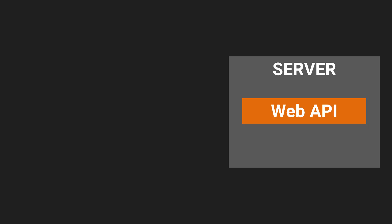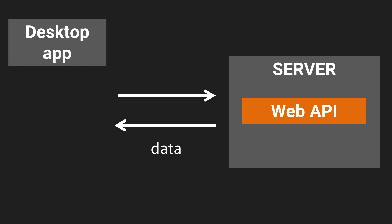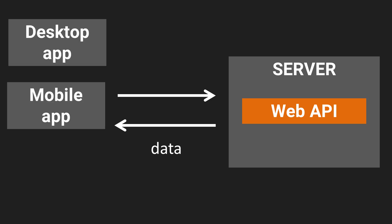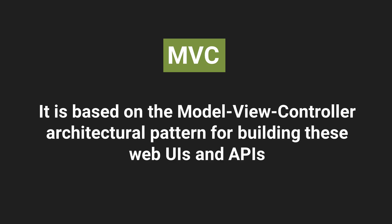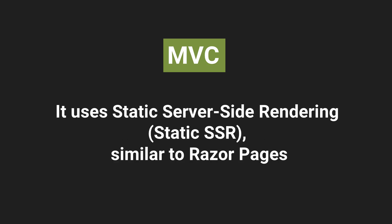If we are building a controller-based web API, that web API can return data formatted in JSON or XML, which can be consumed by any client application such as a desktop app, a mobile app, or a client-side web UI that is a single-page application. ASP.NET Core MVC is based on the model-view-controller architectural pattern, and it also uses static server-side rendering or static SSR.